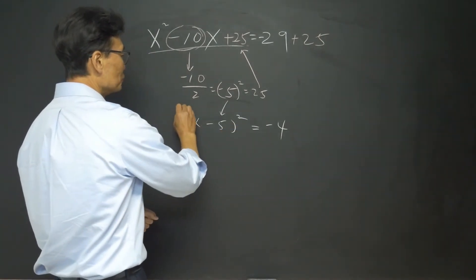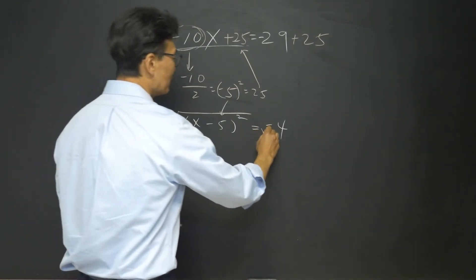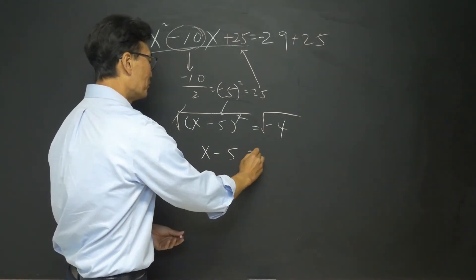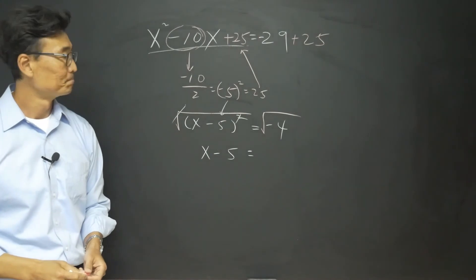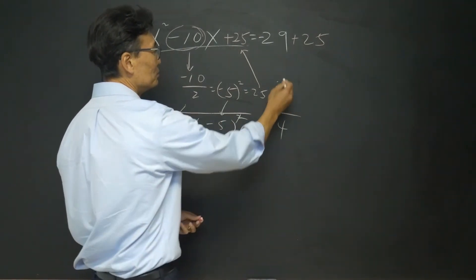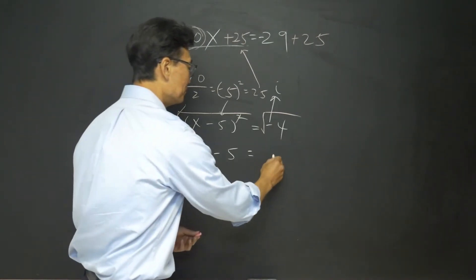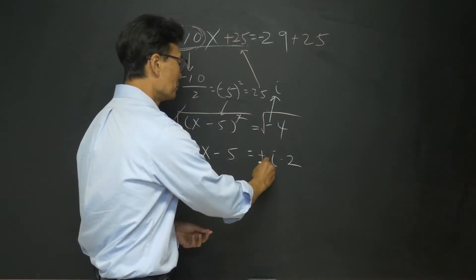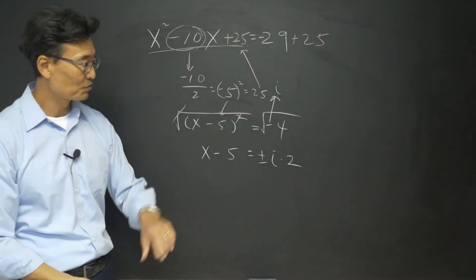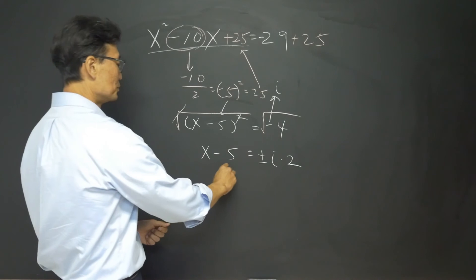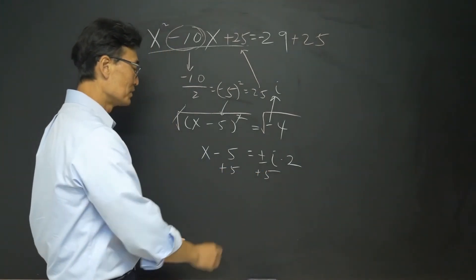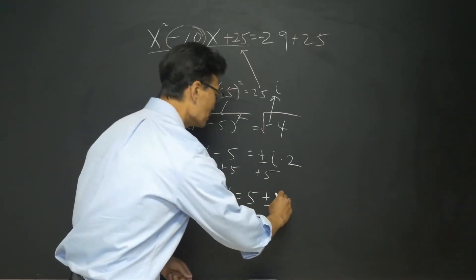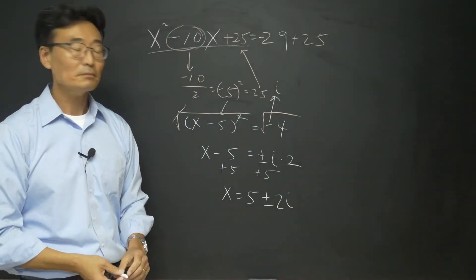To get rid of that square sign, take the square root of the left and right side. Since the square root and square sign cancel out, we're left with x minus 5 on the left side. On the right side, take that negative out and turn it into an i. The square root of 4 is 2 — don't forget the plus or minus. Then the last step is to add 5 to both sides, giving us x equals 5 plus or minus 2i.